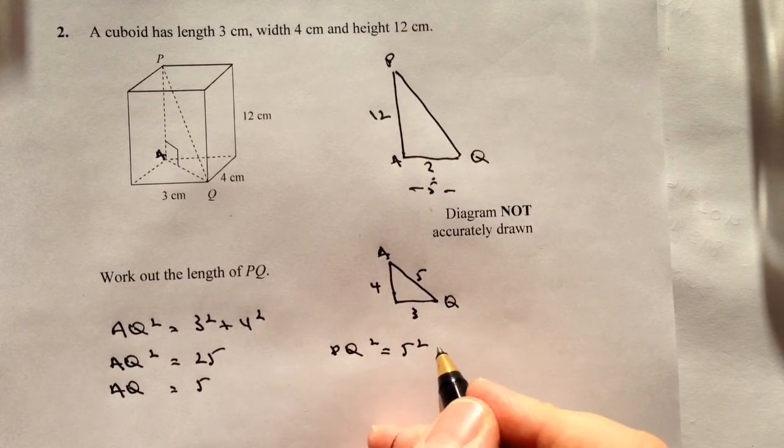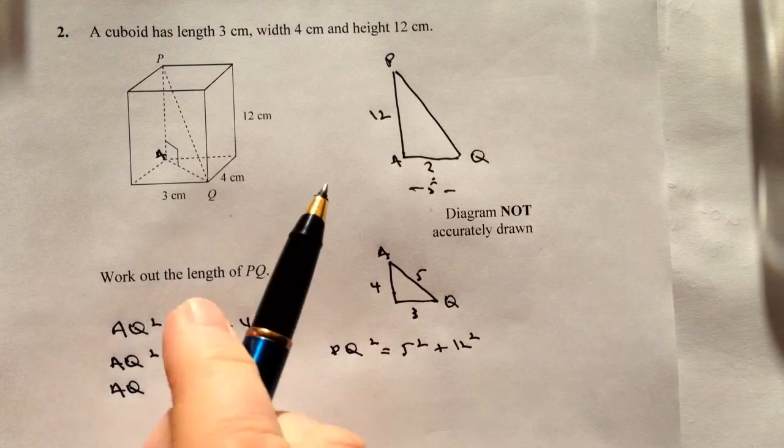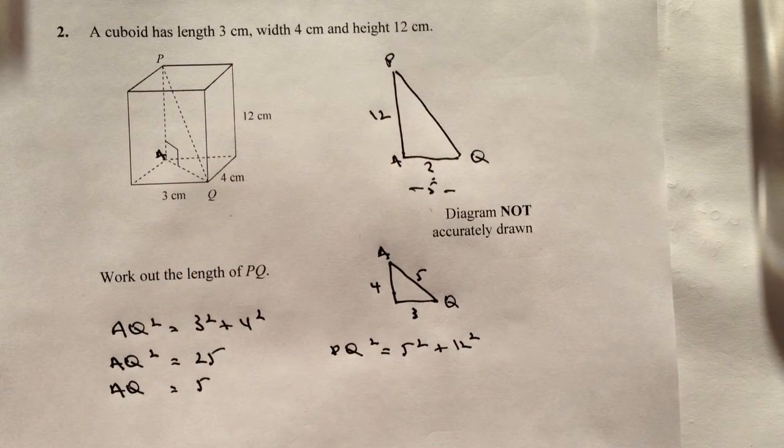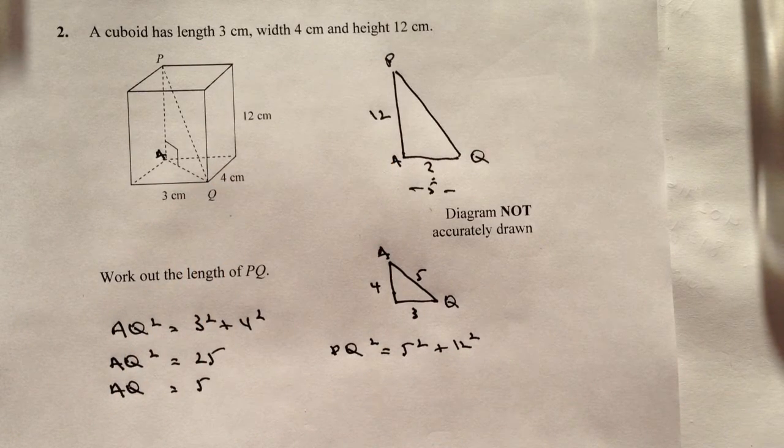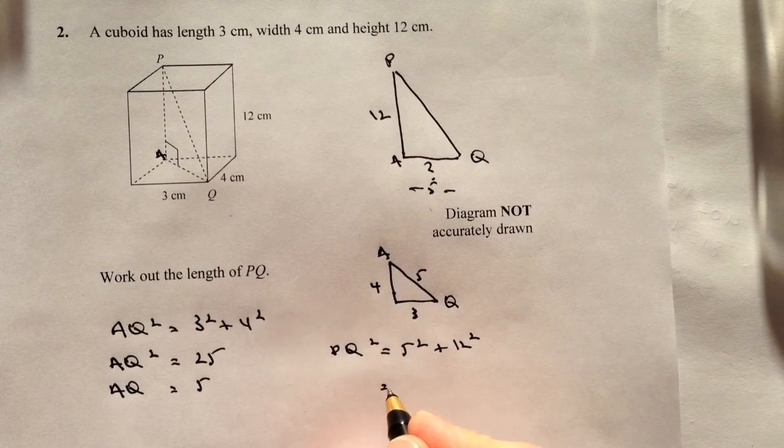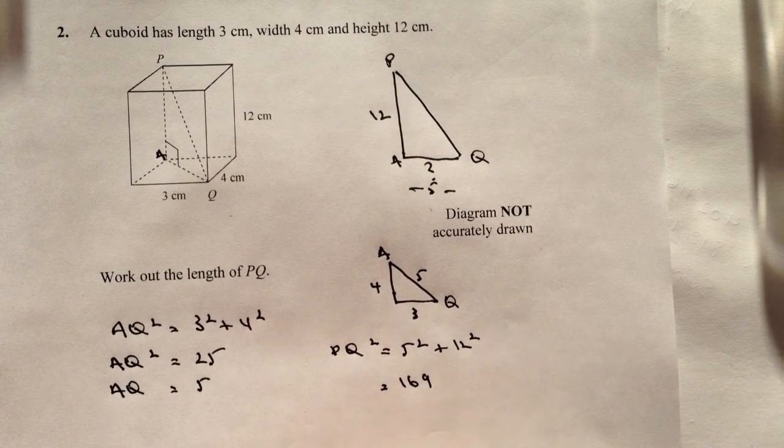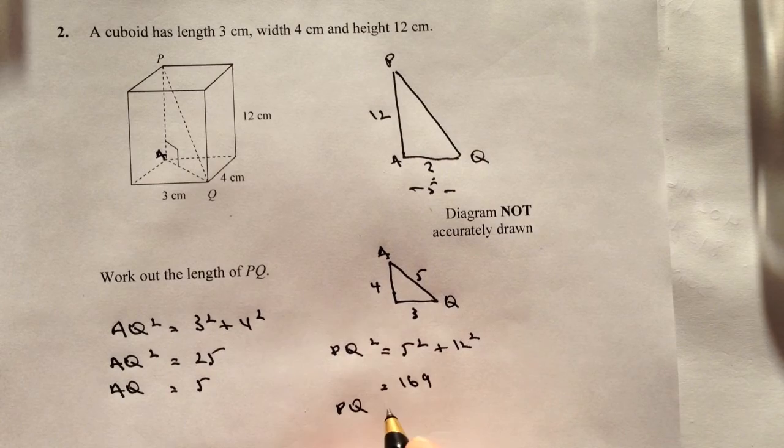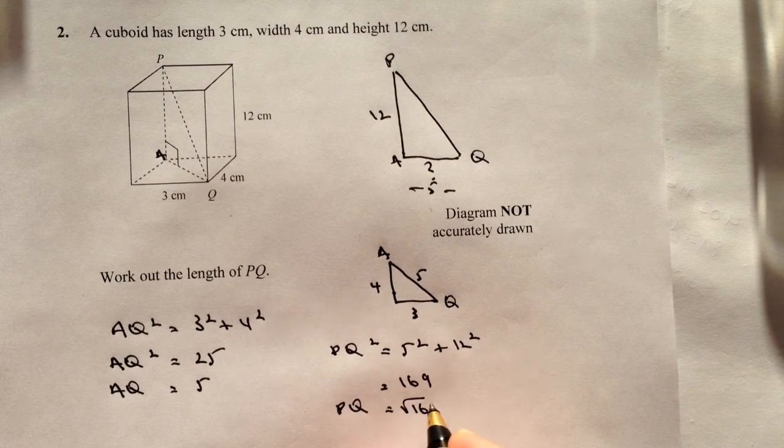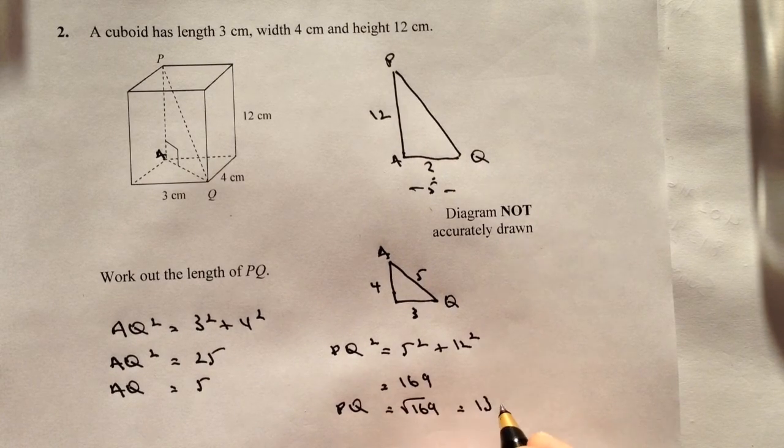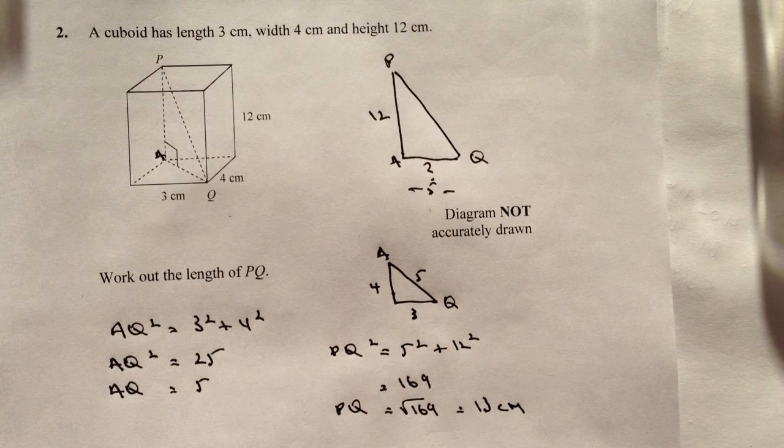So 5² + 12² is going to give you 169, so therefore PQ = √169, which equals 13 centimeters. So in this particular question, PQ equals 13 centimeters.